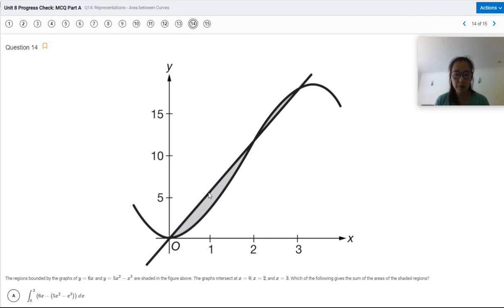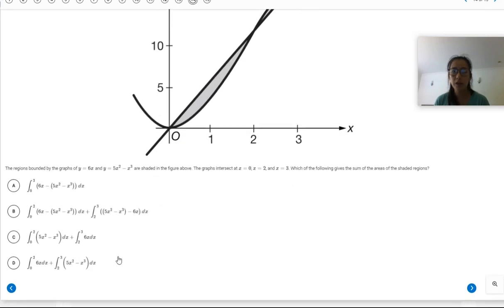So you want to do top minus bottom for each of the separate parts. From zero to two, you're going to want to do top minus bottom, and two to three, you're going to want to do top minus bottom. You can see here y equals 6x is going to be a line. So this line here is going to be y equals 6x and the curve must be y equals 5x squared minus x cubed.